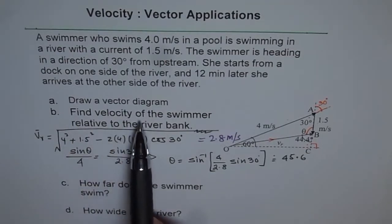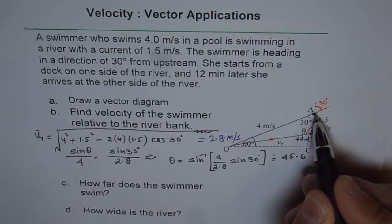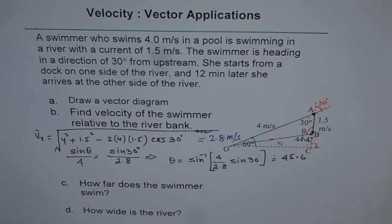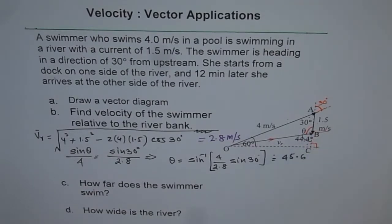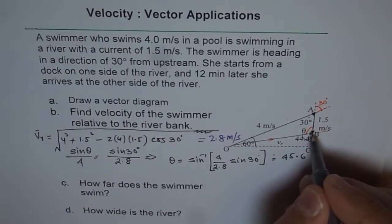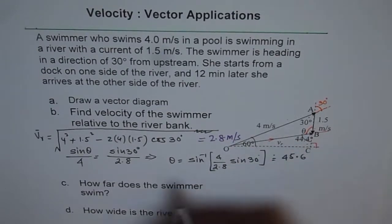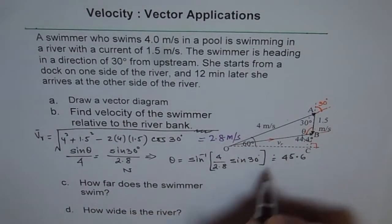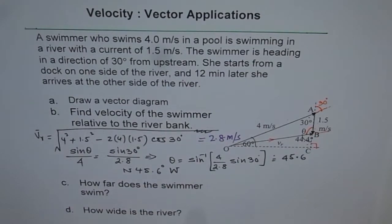The velocity of the swimmer relative to the river bank is 2.8 meters per second. For direction, we can define it from north. So the direction is N 45.6° W — that is, from north, 45.6 degrees west. That is one way of writing it.